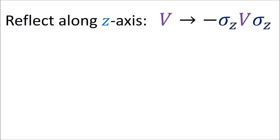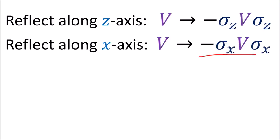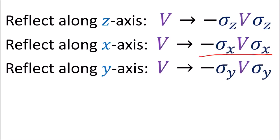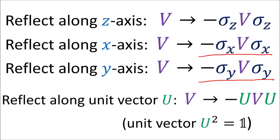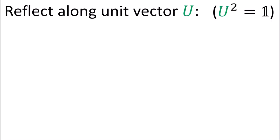We can get similar formulas for doing reflections along the x and y axes. It turns out that we can reflect a vector along any direction that we like. We just pick a unit vector u of length 1 pointing in the direction of the reflection and negative conjugate our polyvector v.